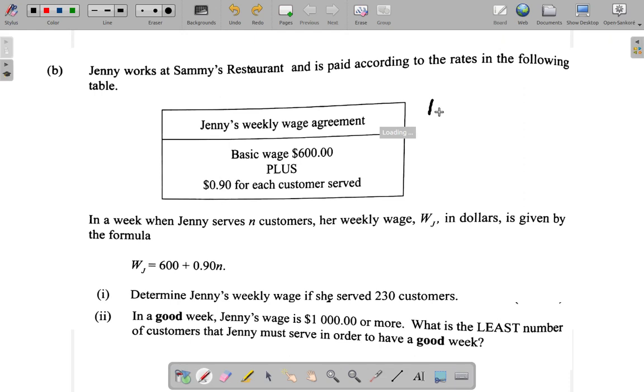In order for Jenny's wage to be $1,000, she must get the $600 plus 0.9 times a certain number of customers n.